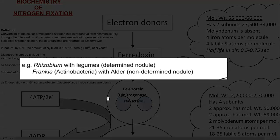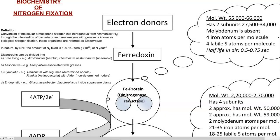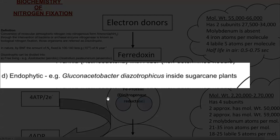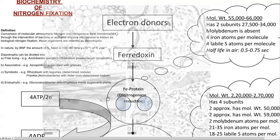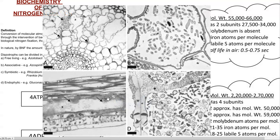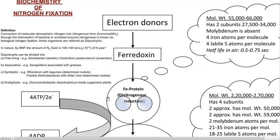There are two types of symbiotic organisms: Rhizobium, associated with the determinate nodule, and Frankia, which is an actinobacteria found in the nodules of the alder plant, forming indeterminate nodules. The distinction between determinate and indeterminate is based on the size of the nodule. The fourth group is endophytic organisms, which are present inside the plant systems, in parenchyma cells or inside xylem and phloem vessels. An example is Gluconacetobacter diazotrophicus, living in association with sugarcane plants.